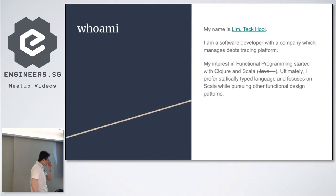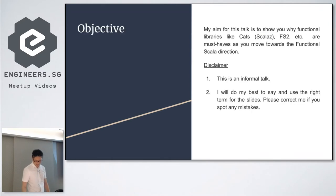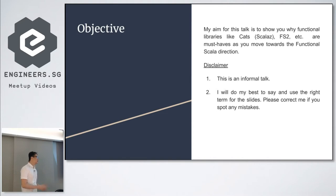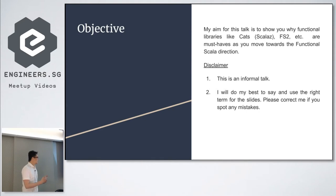I prefer specifically typed language compared to dynamically typed languages, so I just focus on Scala at the moment. The objective of this talk is not about how to use Cats, Scala Z, or similar things. This talk is about why you need them, and the aim is that hopefully after this talk you could see the advantage of functional Scala programming.